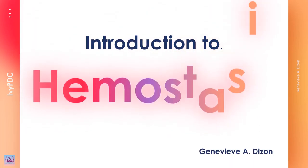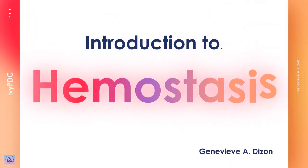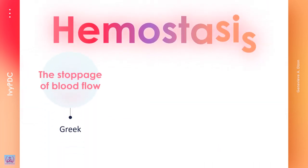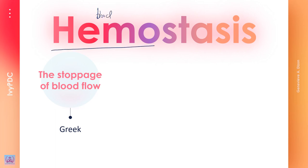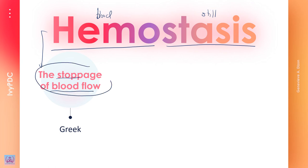Hello everyone, this video is a brief discussion about hemostasis. Hemostasis is a combination of two terms: hemo, which means blood, and stasis, meaning standing still. In this context, the term refers to how the body can stop bleeding when there is injury. This explanation is also the Greek translation of hemostasis.